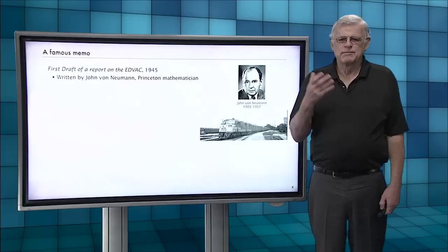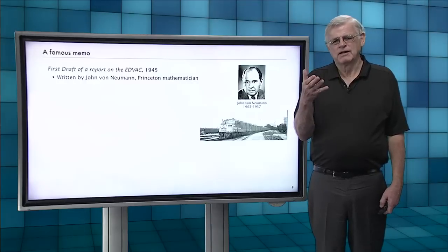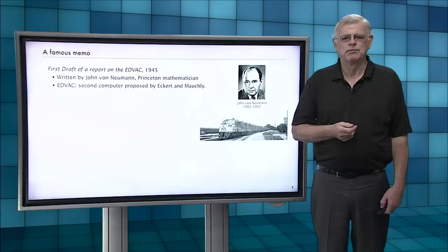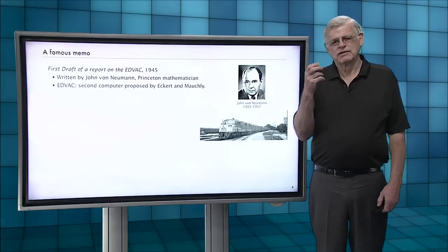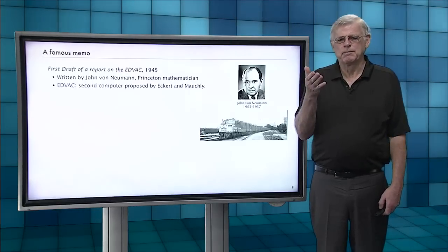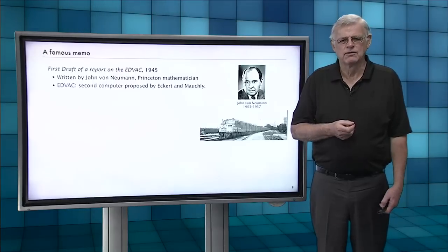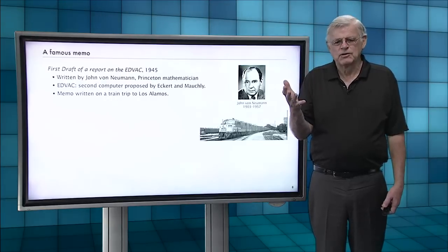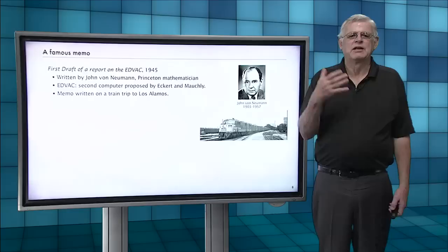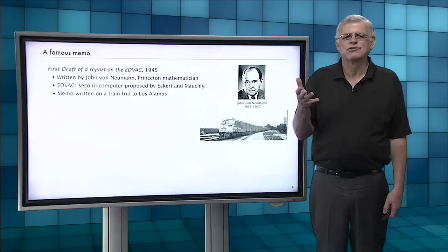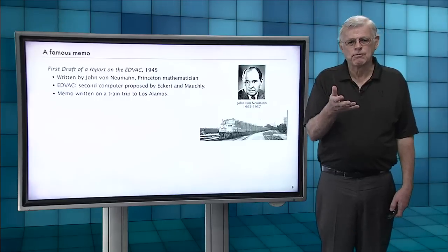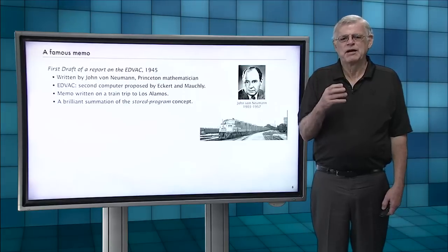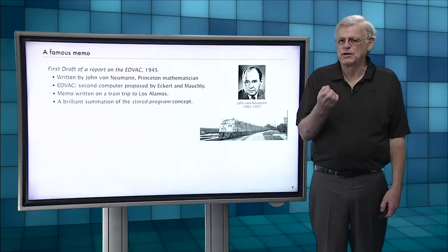Now, there's a famous memo that I want to talk about called First Draft of a Report on the EDVAC. It was written by John von Neumann, a mathematician at Princeton. The EDVAC was the next computer that was proposed to be built by Eckert and Mockley. And von Neumann worked with them over the summer in 1945. But he also was working at Los Alamos on mathematical calculations and simulations for the atom bomb. And he had to take a train to Los Alamos to write up a report on their work on the EDVAC.